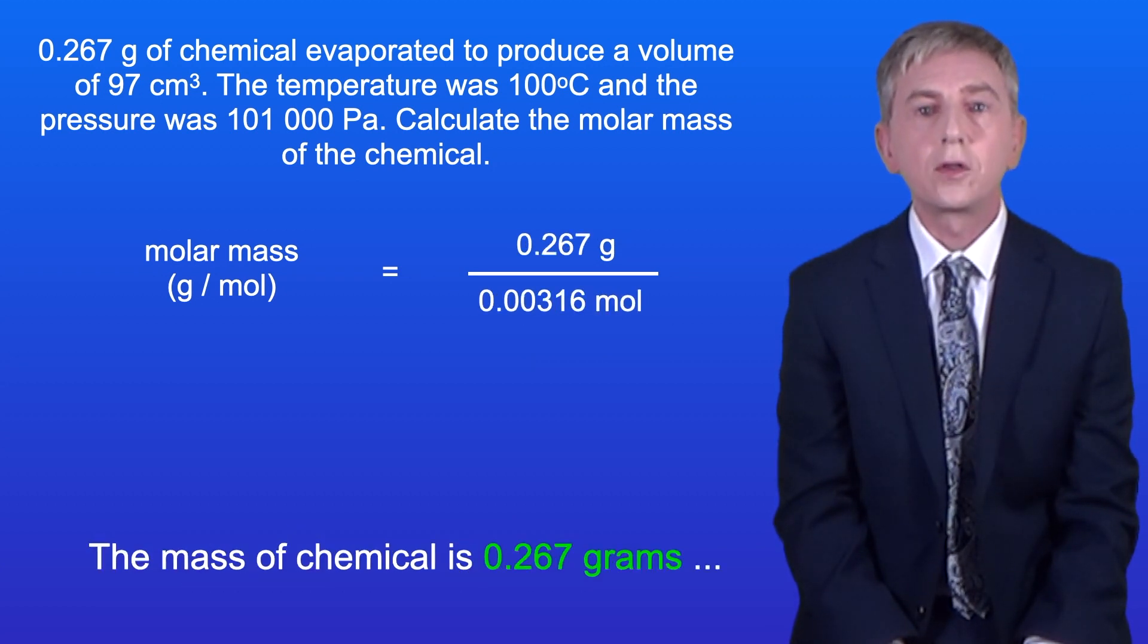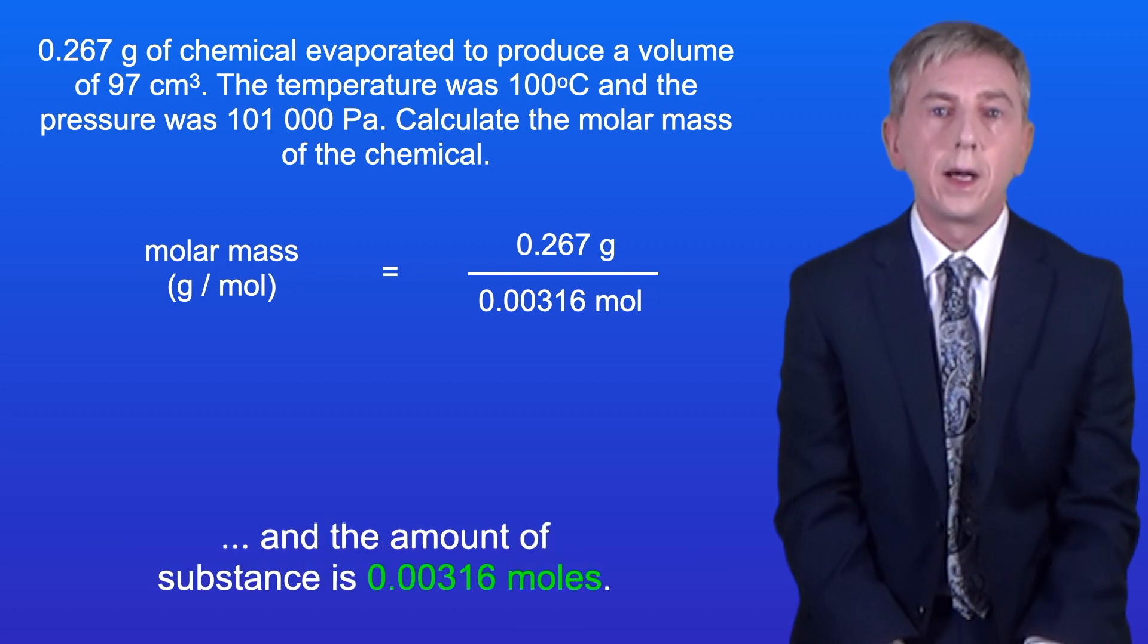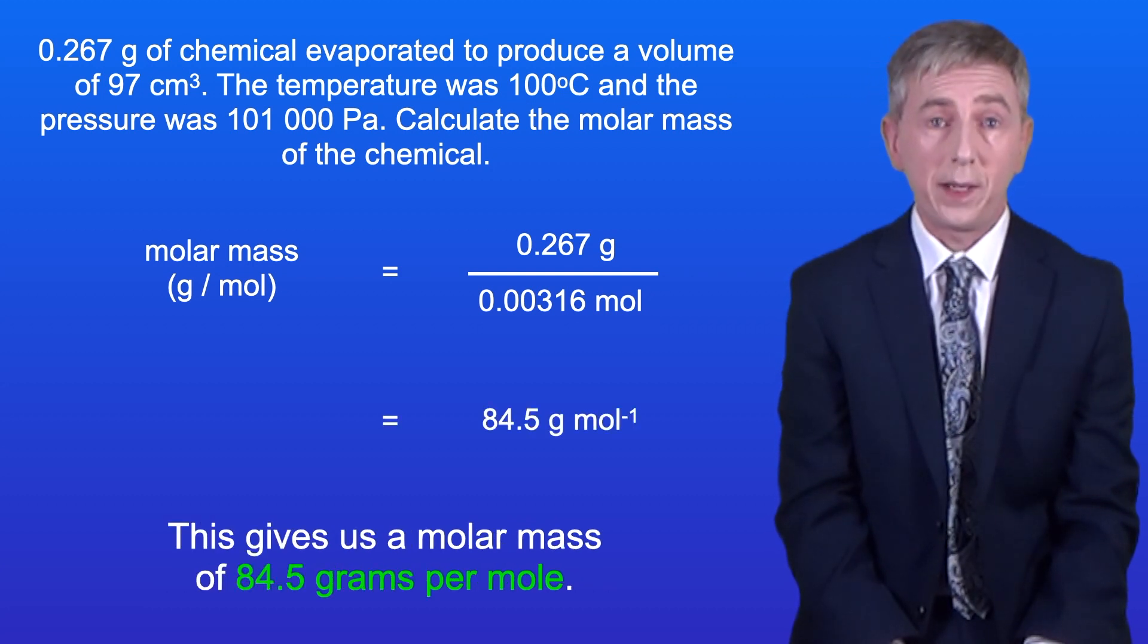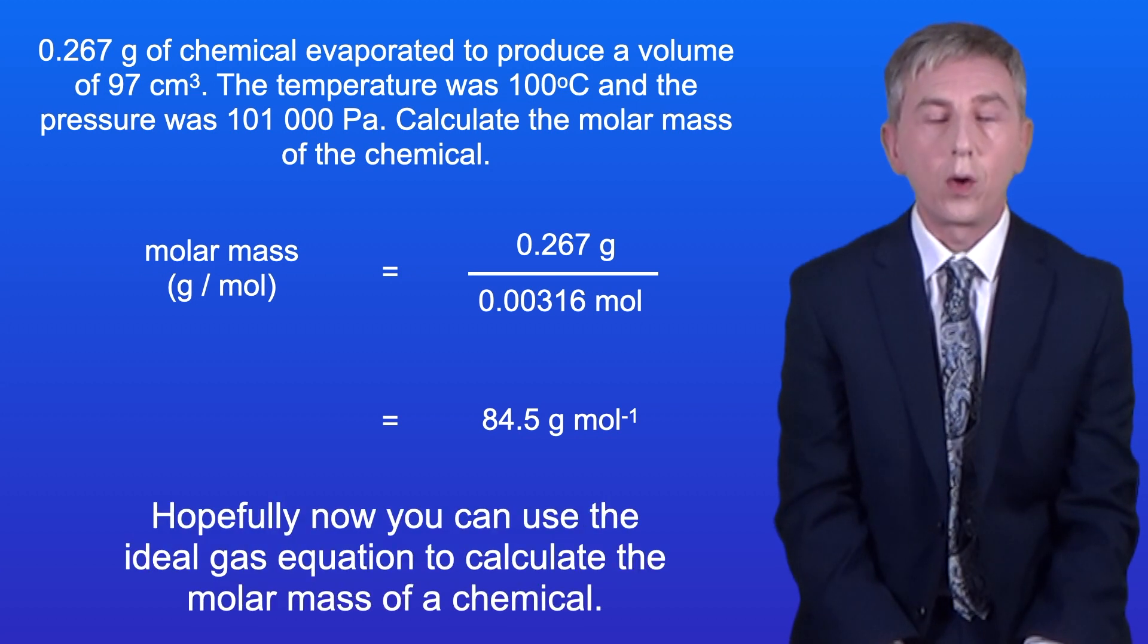The mass of chemical is 0.267 grams and the amount of substance is 0.00316 moles. This gives us a molar mass of 84.5 grams per mole. So hopefully now you can use the ideal gas equation to calculate the molar mass of a chemical.